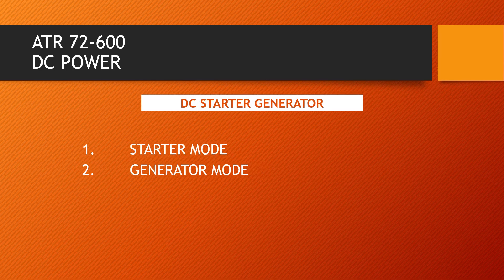Next is about starter generators. The two DC starter generators are driven by the engine accessory gearboxes. Each generator is rated to deliver a nominal output power of 12 kilowatts and 400 amperes, with a nominal operating voltage of 27 to 31 volts, but the nominal setting is 30 volts.